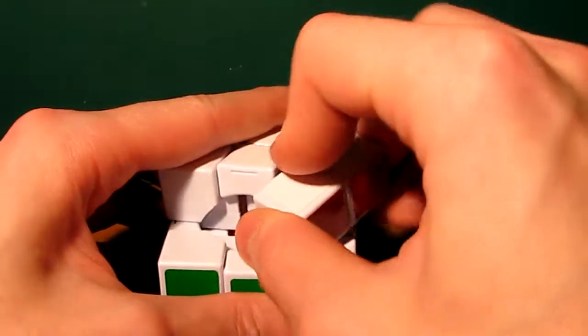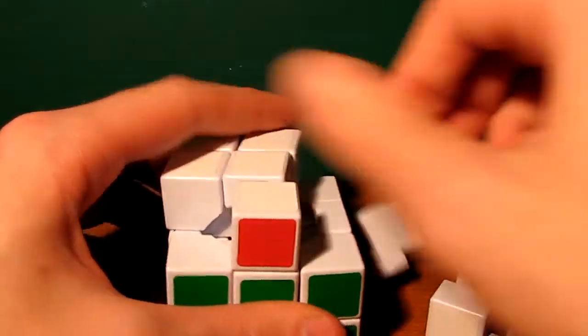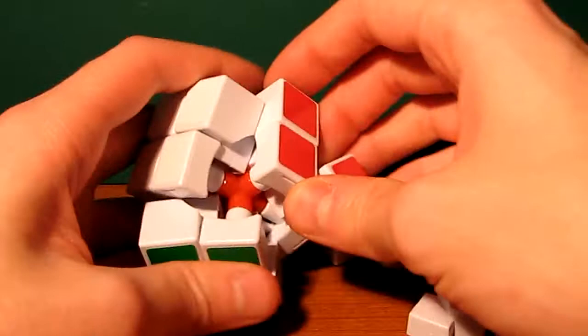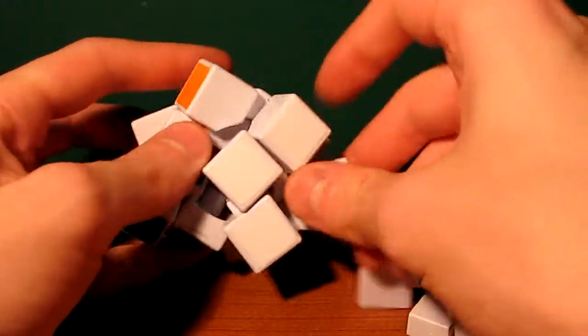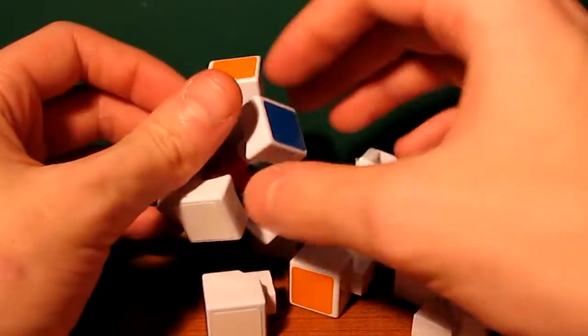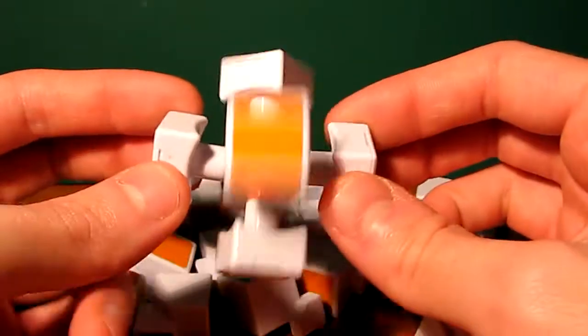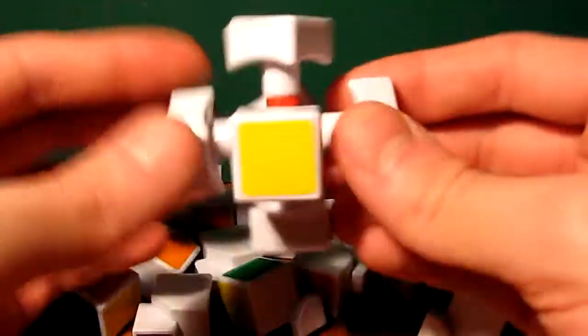Now if I finish disassembling the cube here, I'll show you the core and the centers as well. And the centers, they always stay in the same place relative to each other. They're not going to move around the same way the cubies do. So as you can see here, here's the core. It's just like a six spoke core with the centers attached.